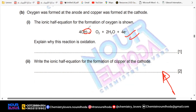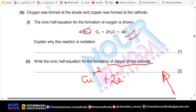Write the half ionic equation that forms at the cathode — formation of copper at the cathode. I need to form copper: Cu²⁺ plus two electrons gives you Cu. Correct.